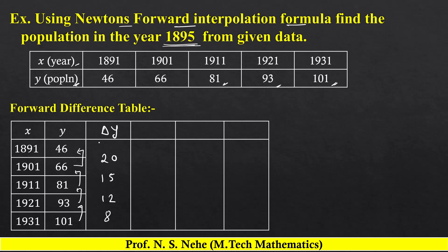इस प्रकार से हम यहाँ पर differences find out करेंगे। Next, second forward difference Δ²y: 15 minus 20 which is minus 5, 12 minus 15 which is minus 3, 8 minus 12 which is minus 4.